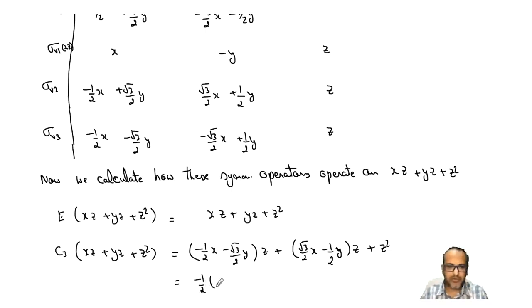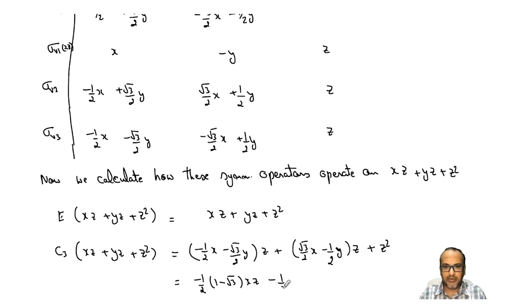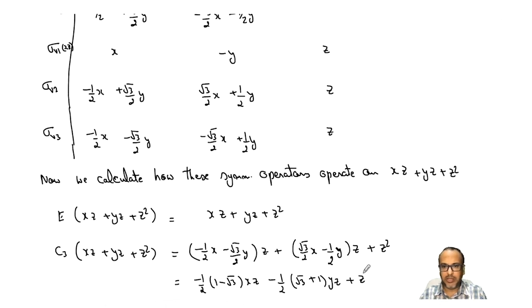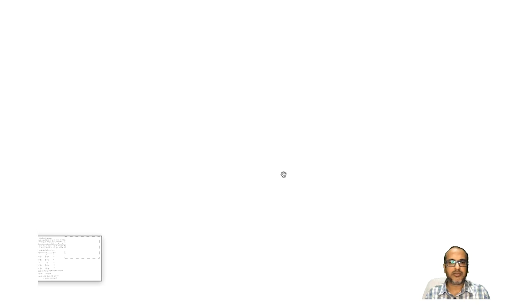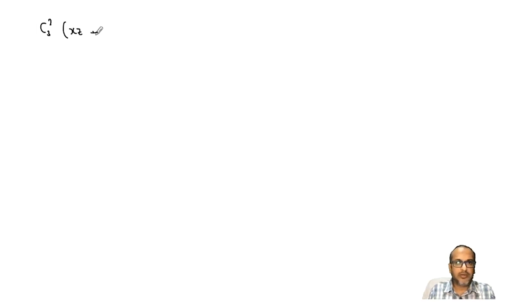The coefficient of xz is −½(1 − √3) and the coefficient of yz is −½(1 + √3), plus z². This is the effect of C3 on the given function. Similarly, we calculate the effect of all the remaining symmetry operators — C3², σv1, σv2, σv3 — on the function. The calculation is tedious but not difficult.